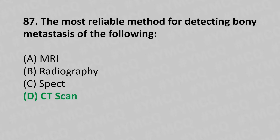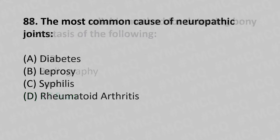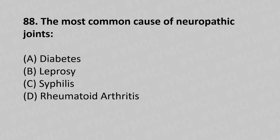Moving to our 88th question. The most common cause of neuropathic joint is: option A diabetes, option B leprosy, option C syphilis, option D rheumatoid arthritis. The answer is option A, diabetes.